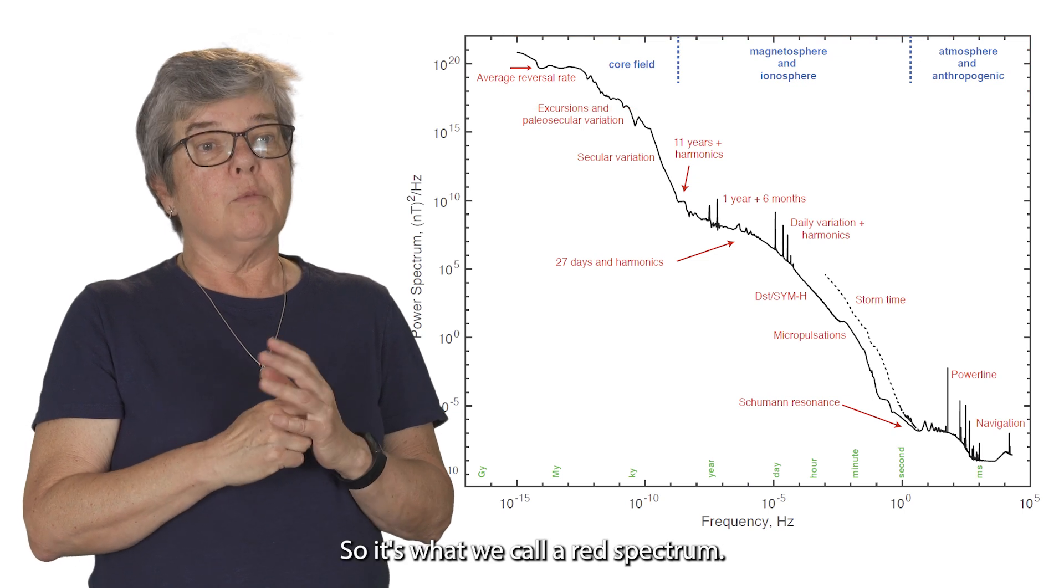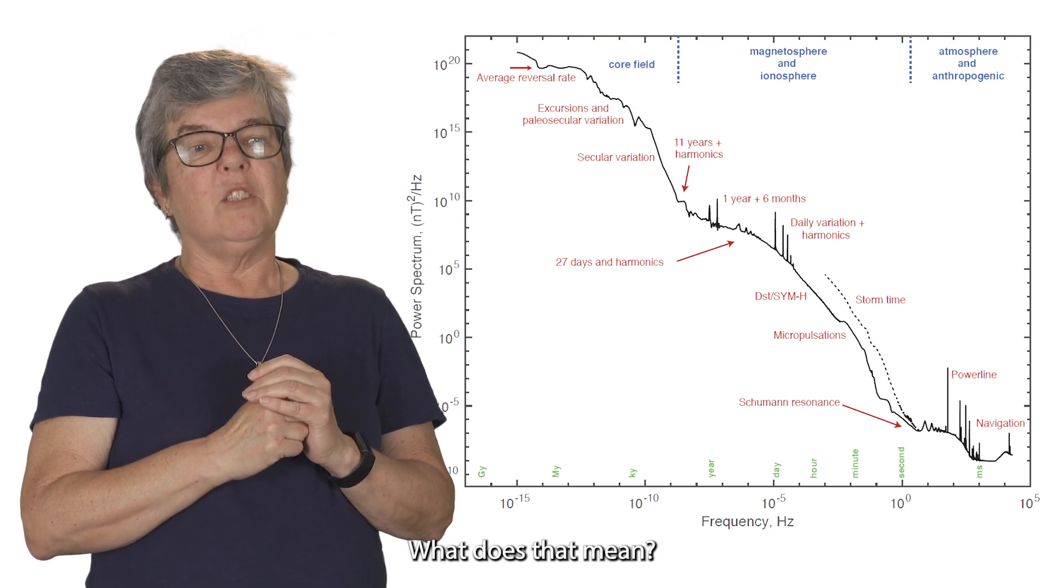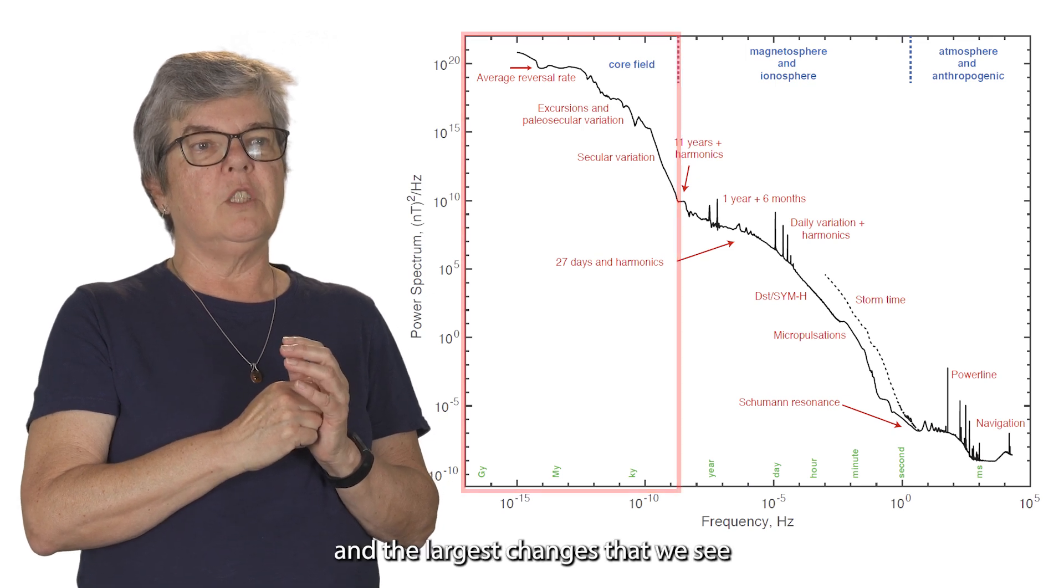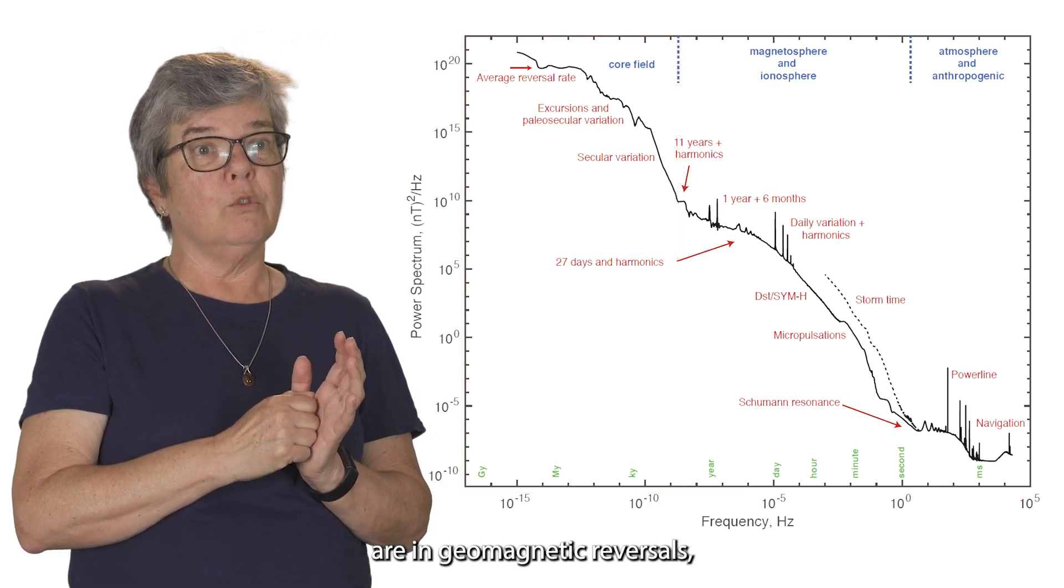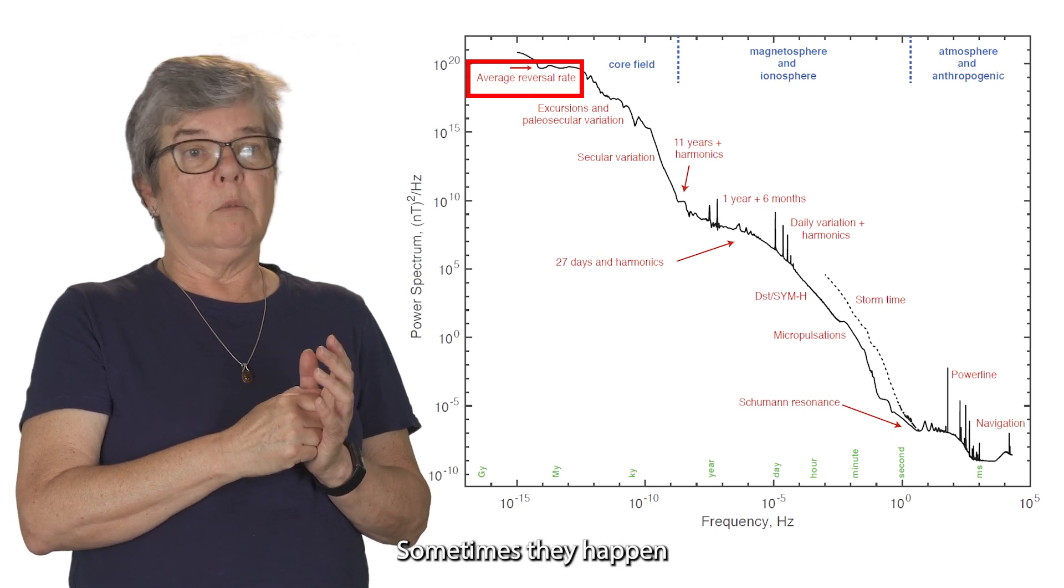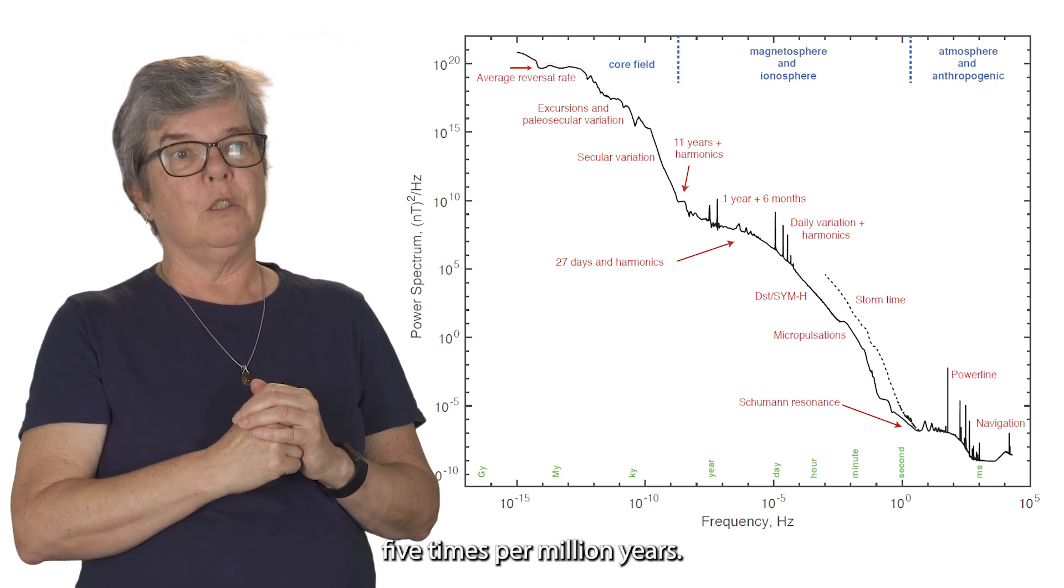This structure in the spectrum shows the different physical sources that I just talked about. So it's what we call a red spectrum. What does that mean? That means that the largest changes occur at the longest periods, and the largest changes that we see are in geomagnetic reversals, which occur at irregular intervals. Sometimes they happen every ten million years. Sometimes they happen five times per million years.